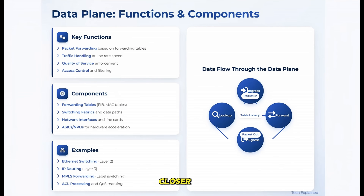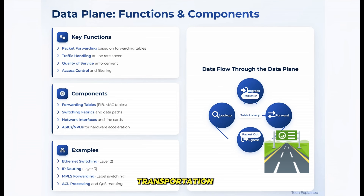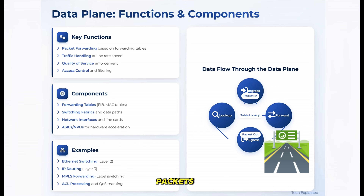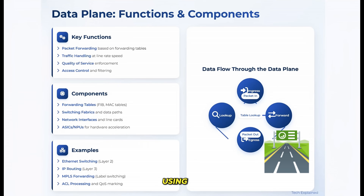Let's take a closer look at the data plane — the brains of the network. Remember our transportation analogy? The data plane is where the actual work gets done; it's the muscle of the network. The primary function of the data plane is forwarding packets based on the decisions made by the control plane. When a packet arrives at a router or switch, the data plane looks at its destination and quickly sends it on its way using predetermined paths.